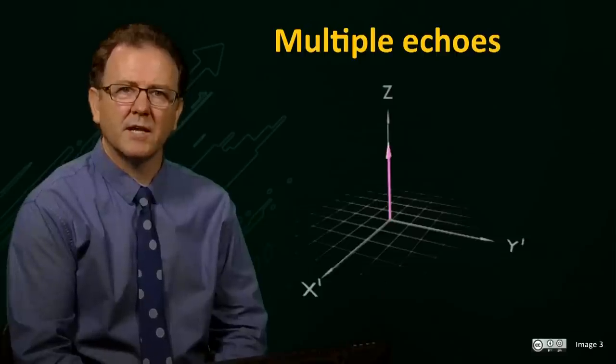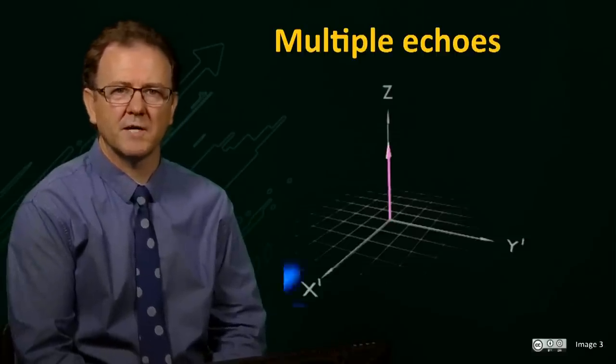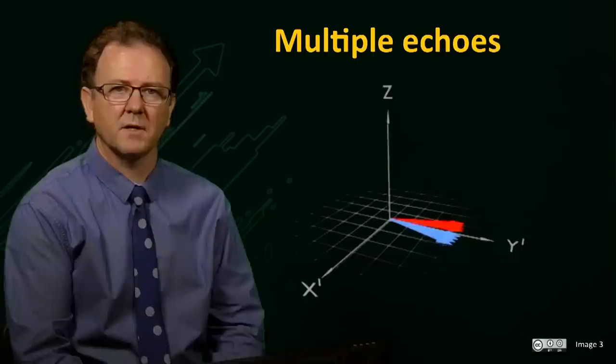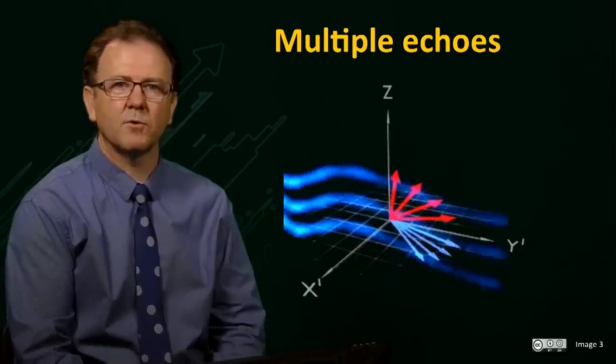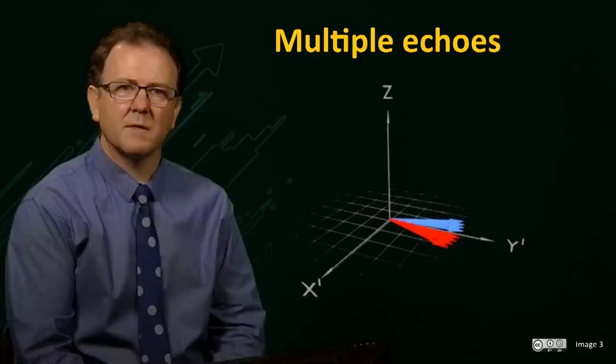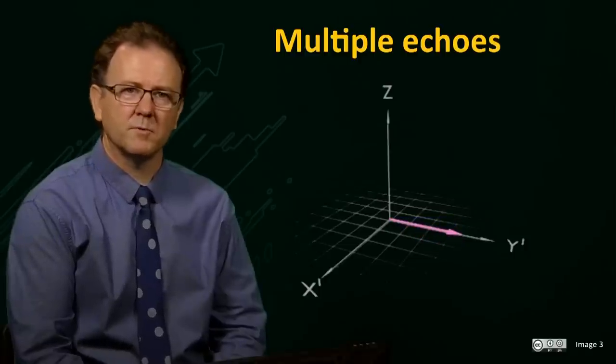If the magnetization is allowed to dephase for a further time tau after the echo and another 180 degree pulse applied, the vectors will again be refocused, forming a second echo. This process can be repeated to form multiple spin echoes.